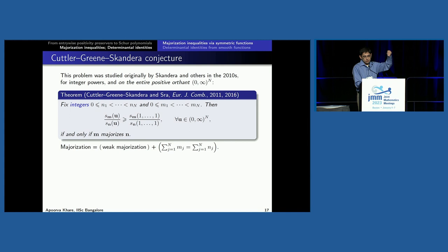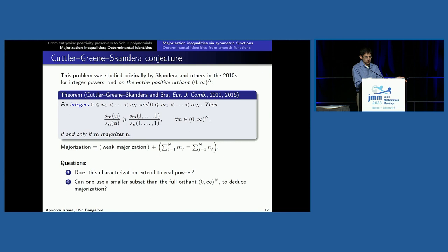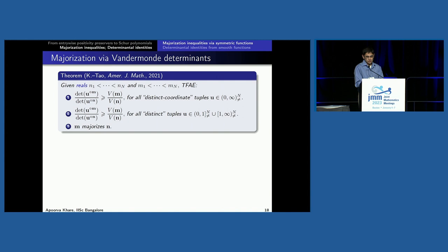Weak majorization says the partial sums starting from the top for the M's dominate those for the N's; majorization adds the extra condition that the total content is the same. Does this extend to real powers? And can one use a smaller subset than the full orthant? The answer turns out to be yes and yes. Given real powers, the ratio of Vandermonde determinants det(U^M)/det(U^N) dominates the ratio det(1^M)/det(1^N) for all u in the entire positive orthant with distinct coordinates if and only if M majorizes N.